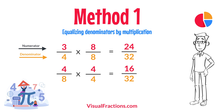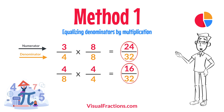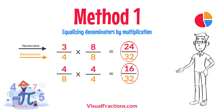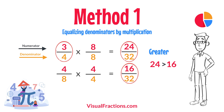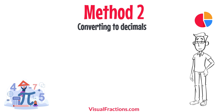Now, with both fractions expressed with a denominator of 32, we can easily compare them. Comparing these, 24/32 is greater than 16/32, so three quarters is the larger fraction.